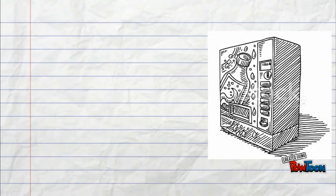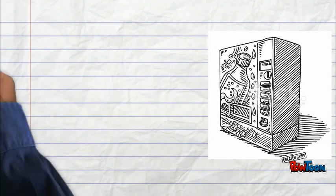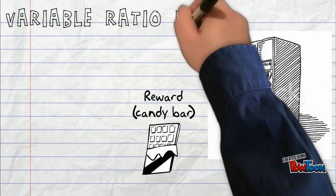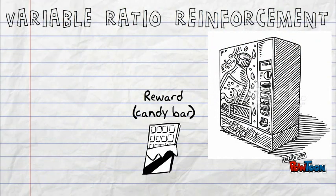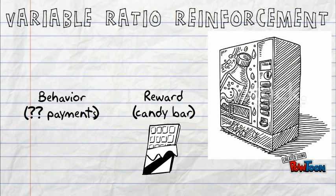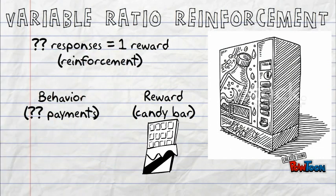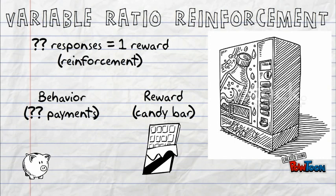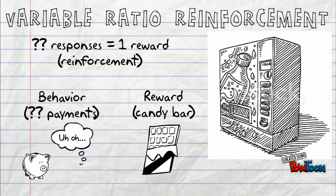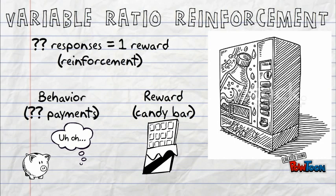If our friend comes upon a machine that uses variable ratio reinforcement, there won't be a number of quarters that will consistently give him his snack. The first reinforcement may require three quarters, but the next one might not come until he puts in eight. The number of responses required for a reward is unpredictable.